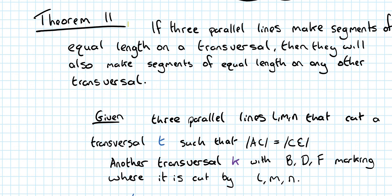Okay, so theorem 11 states that if three parallel lines make segments of equal length on a transversal, then they will also make segments of equal length on any other transversal.